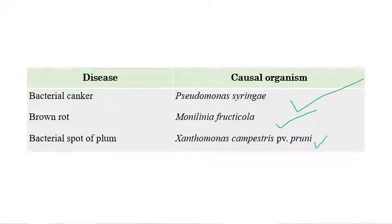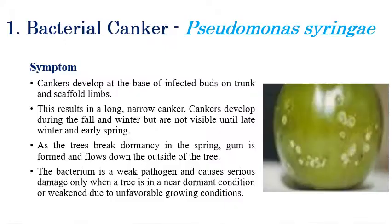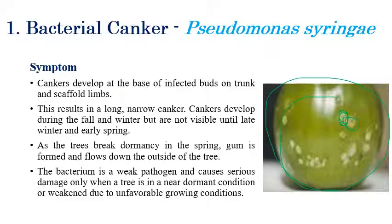The first disease is bacterial canker, caused by Pseudomonas syringae. On the right side we can see cankerous spots — the picture was not very clear but the cankerous spots can be seen on buds, infected trunks, limbs, infected leaves, and infected fruits. We can observe this cankerous growth on the plant.